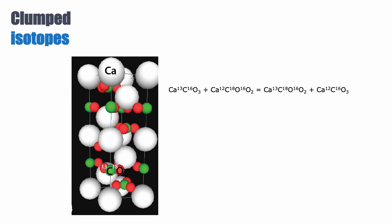So let's look at what the clumped isotopes do. Here I show you a crystal structure for calcium carbonate. For isotopologues, we like to look at equilibrium between different isotopologues. In this case, I'm showing you an equilibrium reaction between two molecules of calcium carbonate.